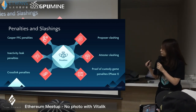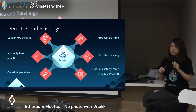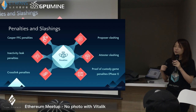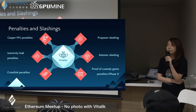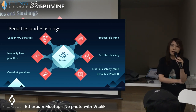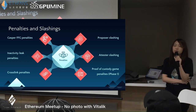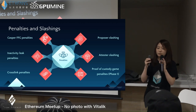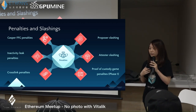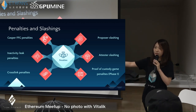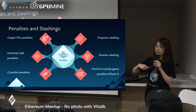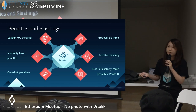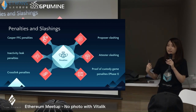In phase 1, we will introduce the proof-of-custody penalty. This is a challenge-and-response game for reducing data availability problems. In the shard block, there are only data — there's no certain state root in the shard. So if I claim I have the data of a certain shard block but actually I don't, someone will challenge me. As a prover, I have to prove I really have it. If I lied, I will get punished. That's the proof-of-custody game.